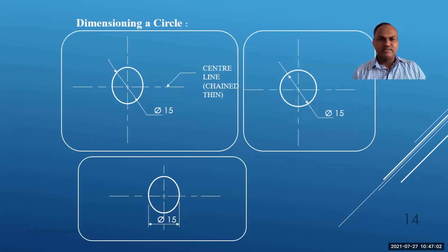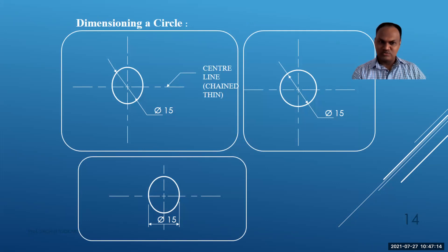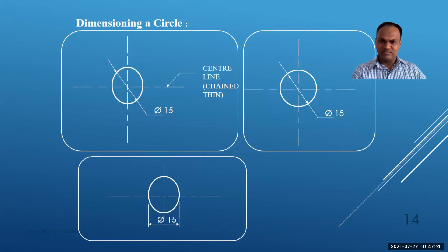For circle dimensioning in detail: the center line must be chain thin; two center lines are drawn, then the diameter line is drawn at 45 degrees with two arrowheads showing the exact diameter of the circle. The diameter value, for example 15, is written along that line. This is the standard method for dimensioning a circle.